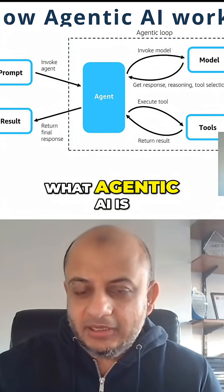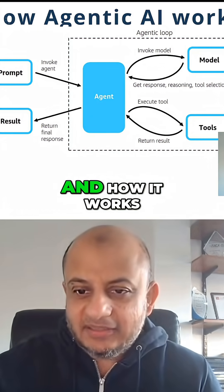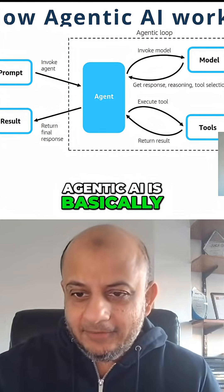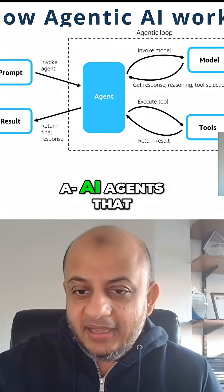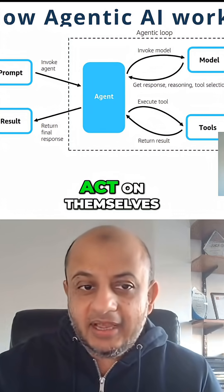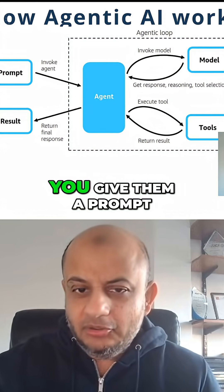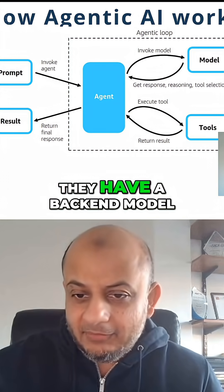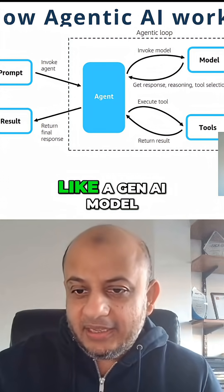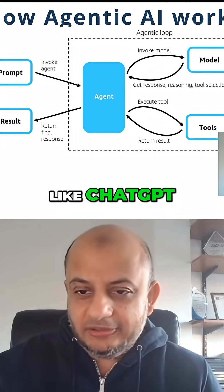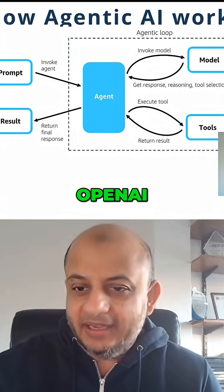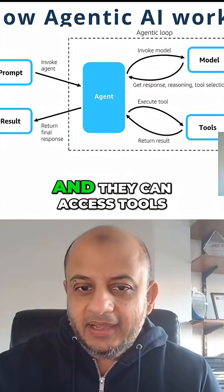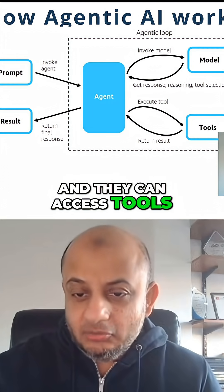You have to understand what agentic AI is and how it works. Agentic AI is basically AI agents that act on themselves. You give them a prompt. They have a backend model like a Gen AI model — like ChatGPT, OpenAI, Bedrock, whatever — and they can access tools.